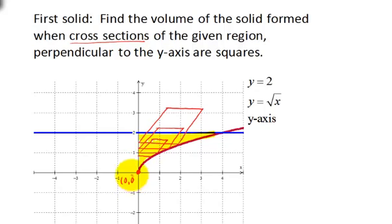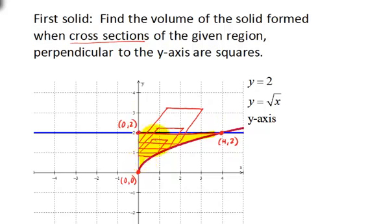The slices are smaller approaching the origin at (0,0), and they get larger and larger as we approach the boundary set by the points (0,2) and (4,2). Basically, we want to stack up all of these squares to get a solid formed by these regions. In order to do that, the first thing we want to do is figure out what the area of each square is. We know the area formula for a square is S squared, where S is the side length.